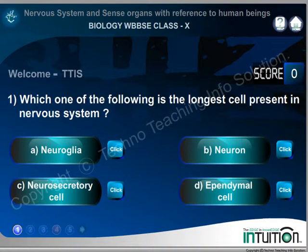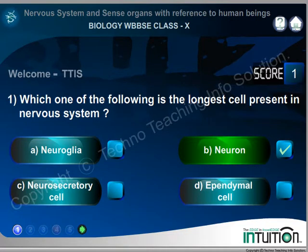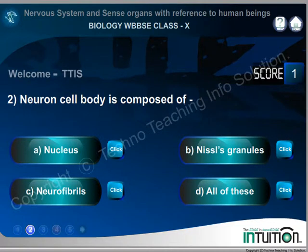Question 1. Which one of the following is the longest cell present in the nervous system? A. Neuroglia. B. Neuron. C. Neurosecretary cell. D. Ependymal cell. Right answer: Neuron.